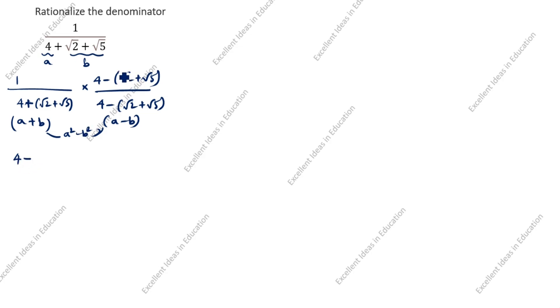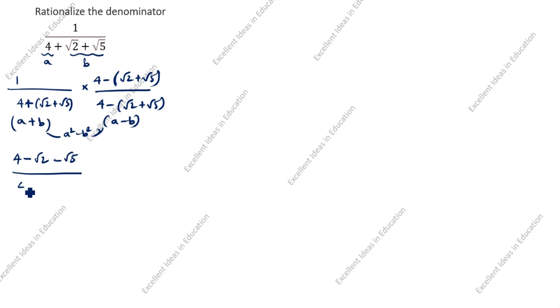In the numerator, we remove the bracket: minus into plus gives minus root 2, and minus into plus gives minus root 5. So the numerator becomes 4 minus root 2 minus root 5. In the denominator, A square is 4 square, and B square is root 2 plus root 5, the whole square.